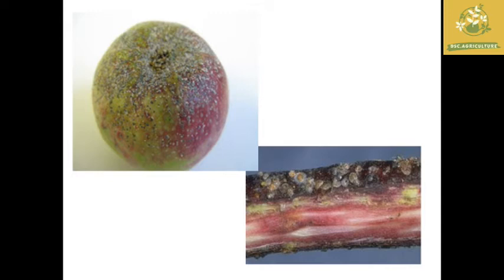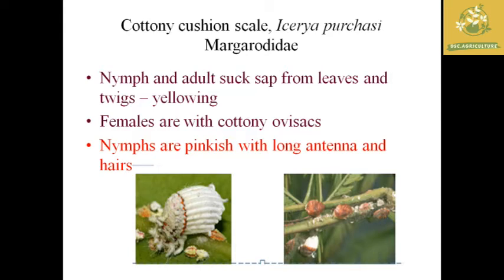The next pest is cottony cushion scale, where the scientific name is Icerya purchasi, belonging to the family Margarodidae. The nymph and adult suck the plant sap, causing yellowing of leaves. The females have a cottony ovisac — you can see in the left-side picture the white cottony ovisac. When you touch it, you can see white scales on your hands. The nymphs are pinkish but do not have the white cottony ovisac, which is secreted only in adults during maturation.